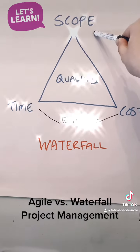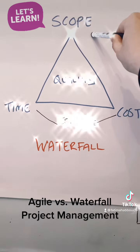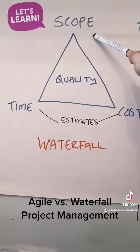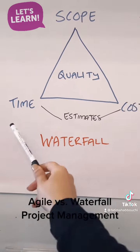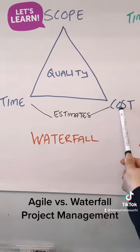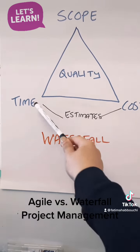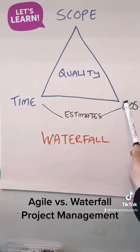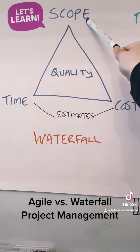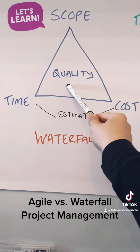In a waterfall environment, scope is predictive up front and well planned in detail, whereas your time and your costs are often estimates, and those estimates may change depending on how we're going to deliver on the scope. We've got quality always at the heart and centre.